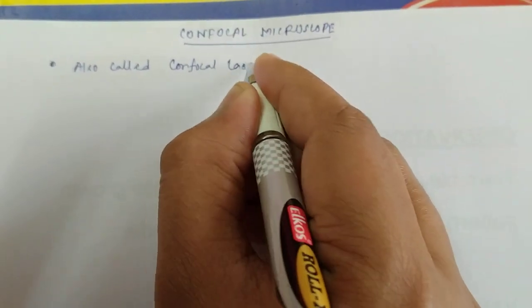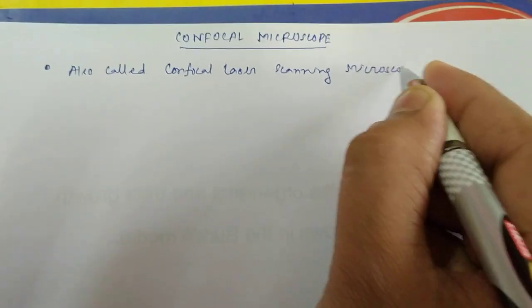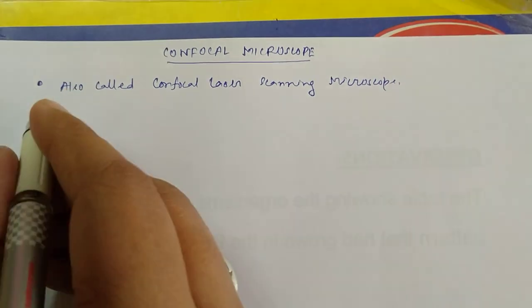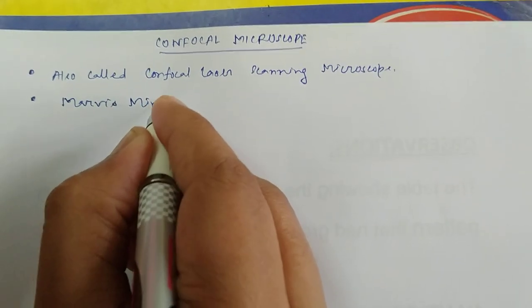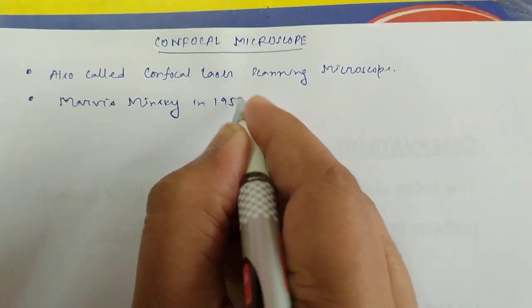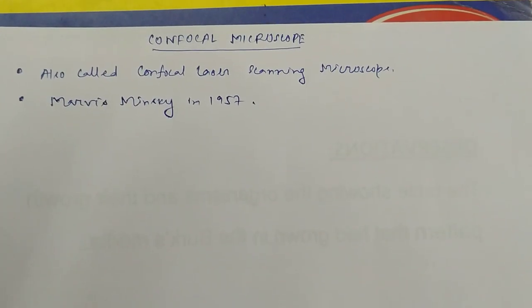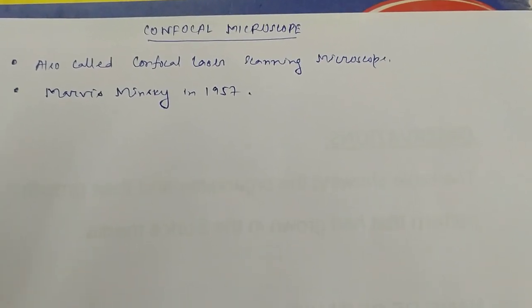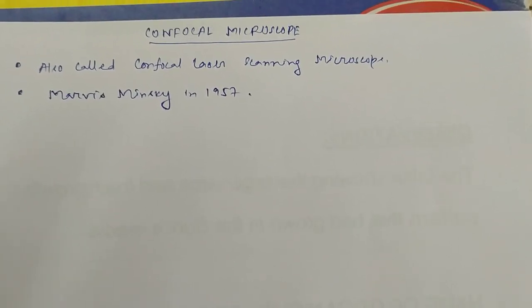The confocal microscope is also known as confocal laser scanning microscope. It was first proposed by Marvin Minsky in 1957. Although computers were not well developed at that time, it has been used more frequently after 2000 — basically around 2005 to 2010 — and the number of patents regarding confocal microscopy has increased drastically in those years.